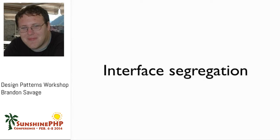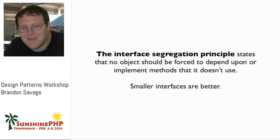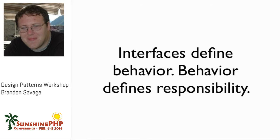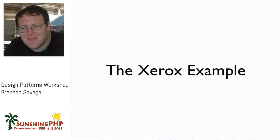Let's talk about I for Interface Segregation. The Interface Segregation Principle says that objects shouldn't be forced to depend on or implement methods they don't use. To shorten that: smaller interfaces are better. Interface defines behavior, and behavior defines the responsibility of an object, so the smaller the interface you define, the better your application will be.